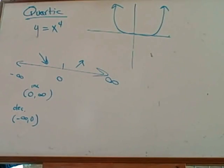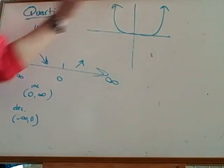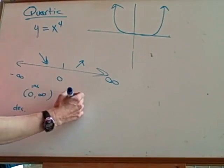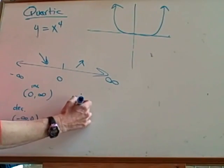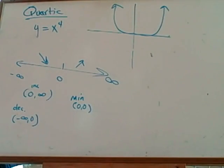Relative local maximum, there is no maximum on this graph. Relative local minimum, there is a minimum. It'd be zero, zero. Minimum.